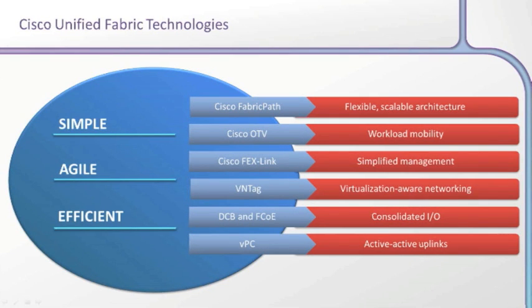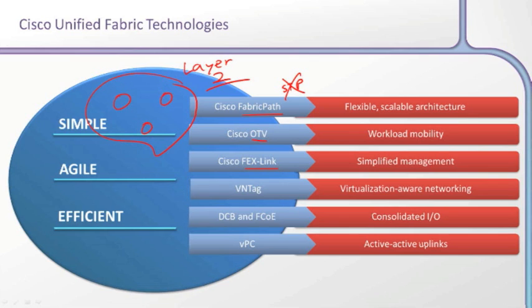Let's look at a lineup of the key technologies you will become very proficient in. Fabric Path technology allows us to eliminate a reliance on spanning tree protocol. Overlay transport virtualization joins different data centers together in one Layer 2 domain. FEX link technology extends the virtual machine concept all the way through our network infrastructure. VN tagging identifies a virtual machine and its traffic as it moves through the data center. Data center bridging and Fibre Channel over Ethernet. And virtual port channeling — a technology to stop spanning tree protocol from blocking key links within our infrastructure.